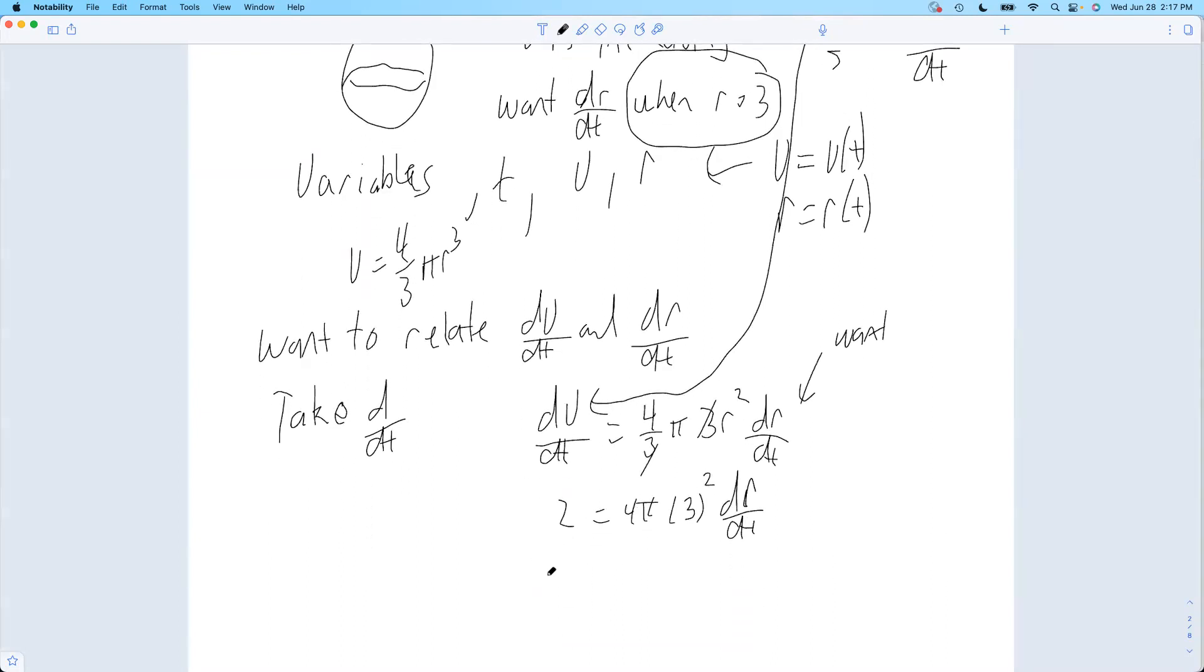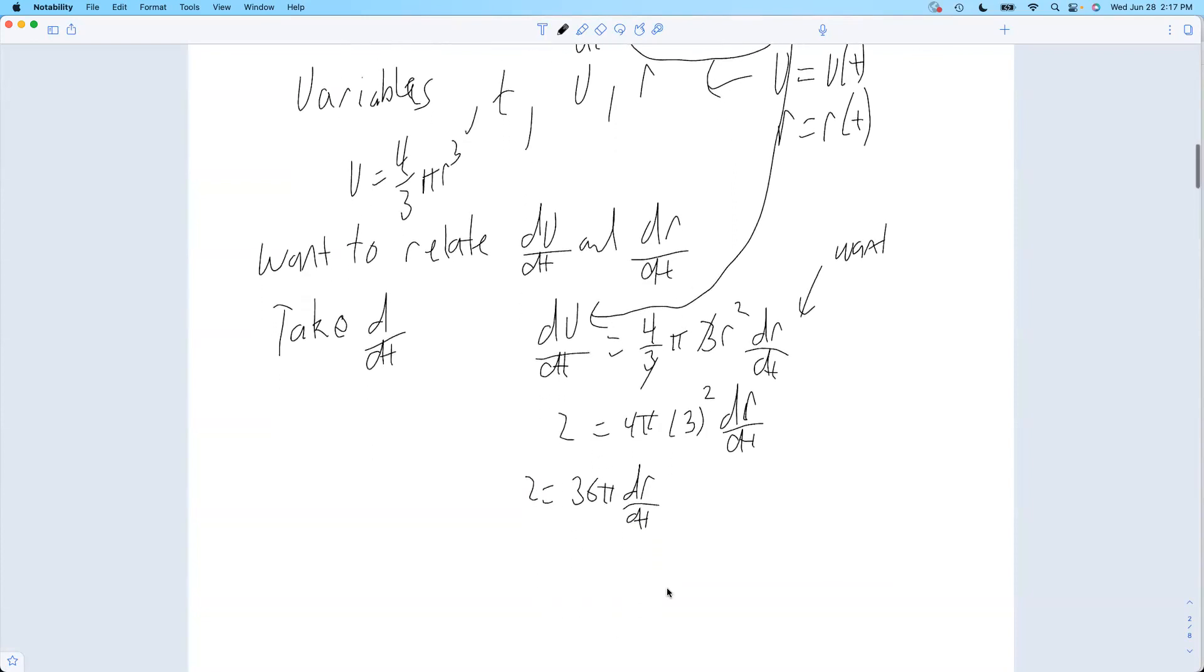So let's see. That'd be nine times four. So two equals 36π dr/dt. So then just divide over, dr/dt will be one over 18π. You can check my arithmetic there.